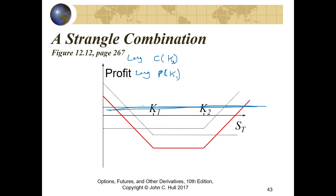If we know the price will go in a certain direction, creating a strangle is not the optimal choice. We create a strangle because we don't have an idea whether the price will go up or down — all we expect is that there will be huge volatility. In that aspect, it is similar to the straddle.